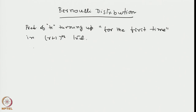If we denote this probability by the notation p of r plus 1, we call this the Bernoulli distribution, and denote it as p_r. This probability can be worked out as follows. The probability that r tails have turned up successively is q to the power r, where q is the probability per trial that a tail turns up. And at the r plus 1th time, a head turns up with probability p, so we multiply by p.